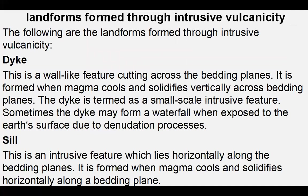The second one is a sill. A sill is an intrusive feature which rises horizontally along the bedding planes. It is formed when the magma cools or solidifies horizontally along the bedding plane.